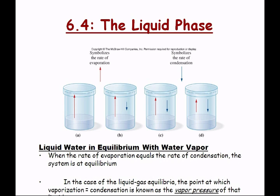This diagram shows an evacuated beaker with a petri dish. We put liquid in there. At time zero, the rate of evaporation is very high — red arrows show evaporation, blue arrows show condensation. At time one, some condensation starts. At time two, a bit more. At equilibrium, you have equal amounts evaporating and condensing. That beaker is said to be at equilibrium because the rate of evaporation equals the rate of condensation.